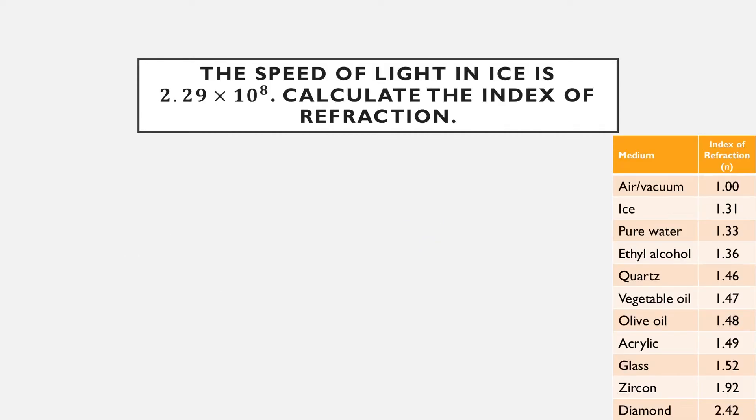Okay, so this first question tells us that the speed of light in ice is 2.29 times 10 to the 8 meters per second. And it's asking us to calculate the index of refraction, obviously here in ice. So let's consult our table. We see that ice here is 1.31. So that's given to us. What we're going to do now is just verify whether or not we are correct.